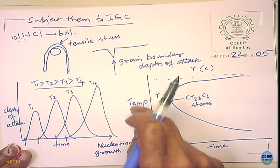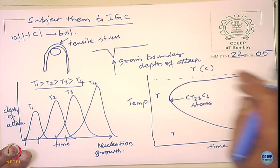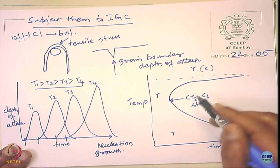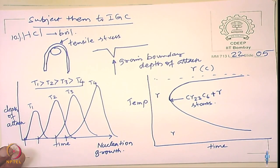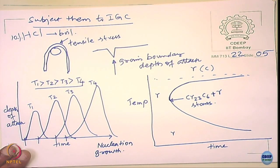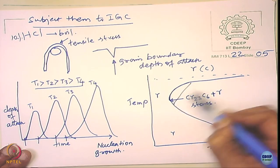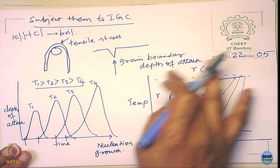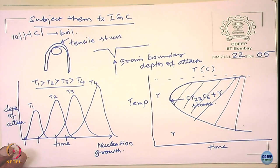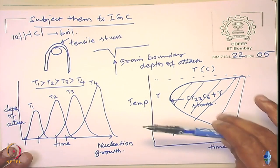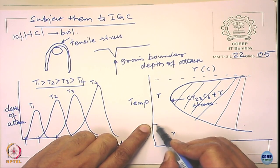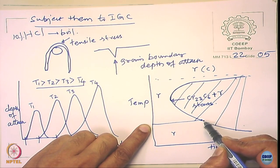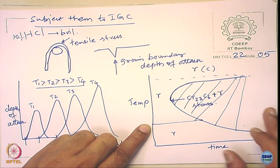This gives us the typical TTT — time-temperature-transformation — diagram, where the gamma is transforming into gamma plus chromium carbide. Please notice from this diagram: chromium carbide starts forming only within a specific temperature-time region, and around the boundaries of that region there will be no chromium carbide formation. At any given temperature, unless you cross the curve line, the alloy will not get sensitized — this is true for all cases.